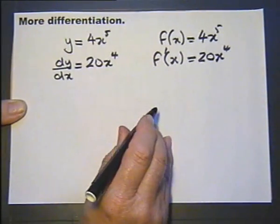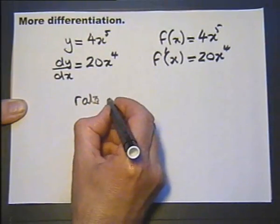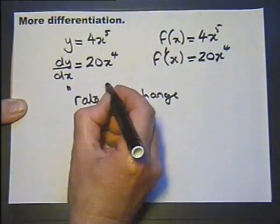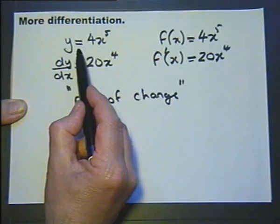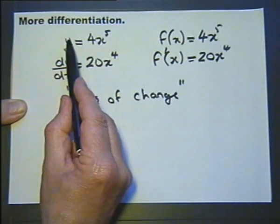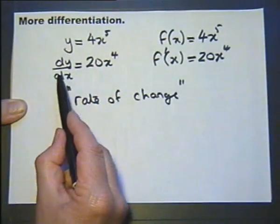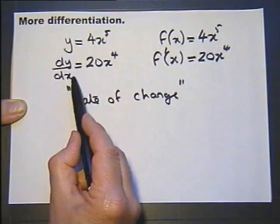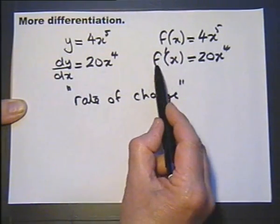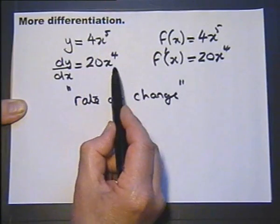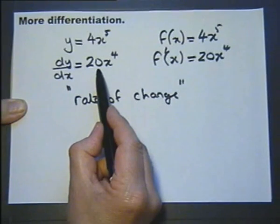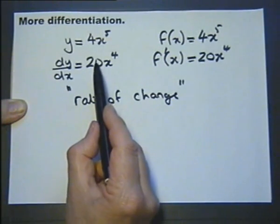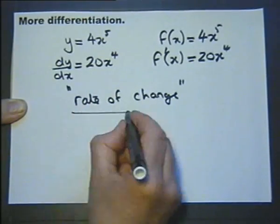But something else is the rate of change. This is the equation of the graph. So in other words, if we've got an x-coordinate, we substitute it in there to find the y-coordinate. This is the equation of the gradient, the gradient function. So if we substitute an x-value into there, we're finding the gradient of the tangent to this graph at the point of the x-value we substitute it in. But the gradient on the graph can also be called the rate of change.